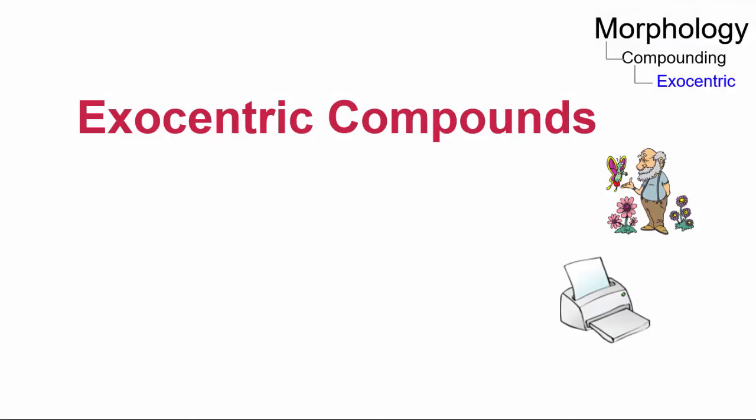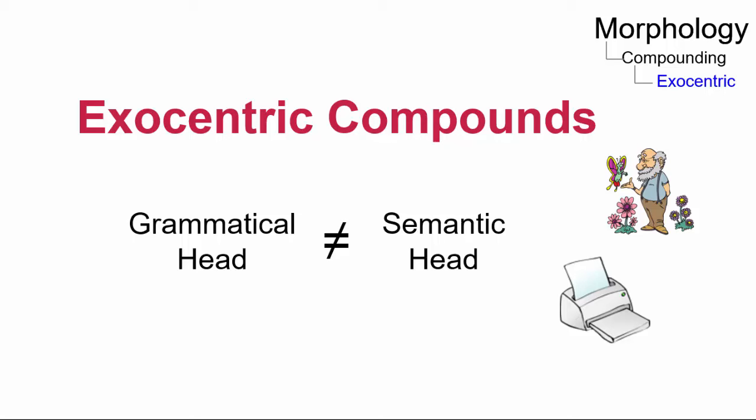An exocentric compound refers to the combination of two or more roots, words, or phrases whose grammatical head does not straightforwardly define its meaning. Instead, the head of the compound describes some unexpressed semantic head.